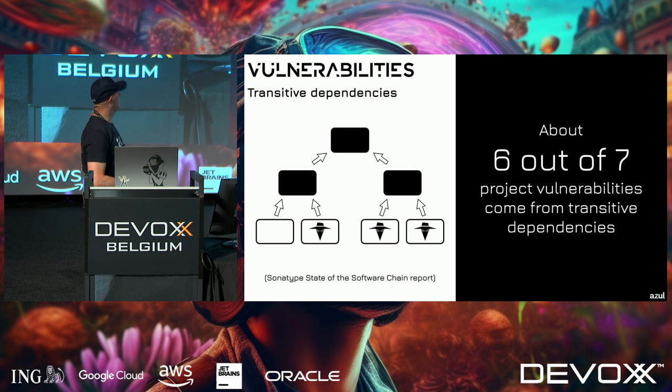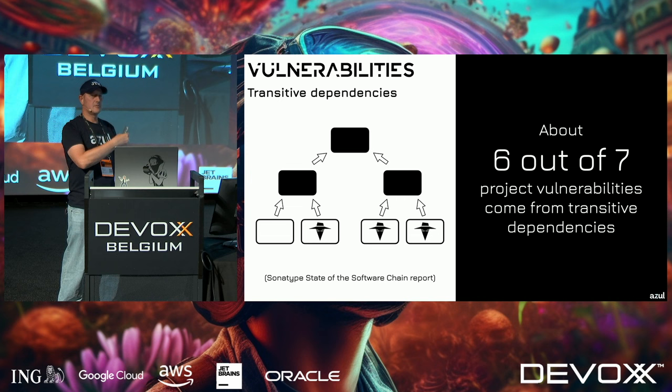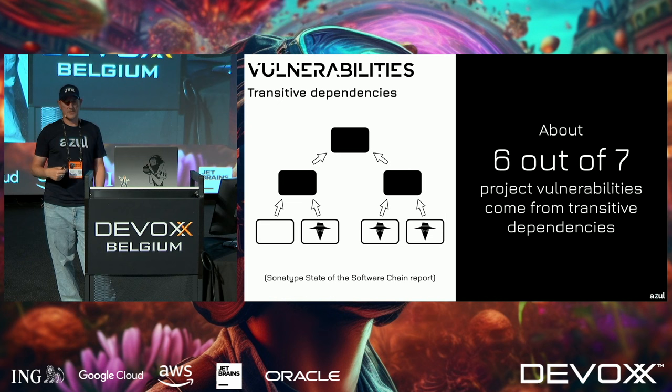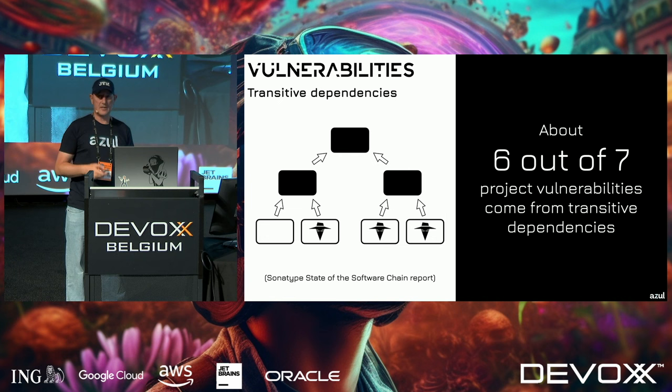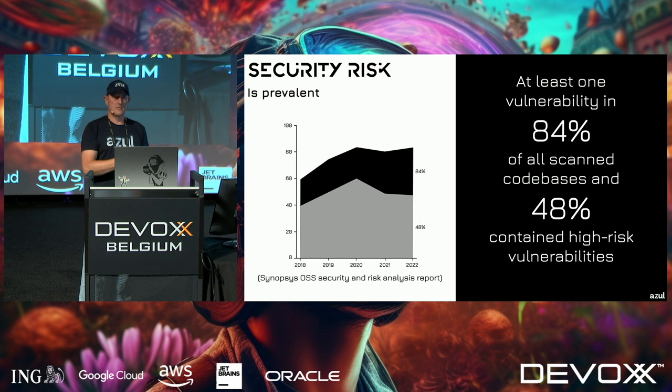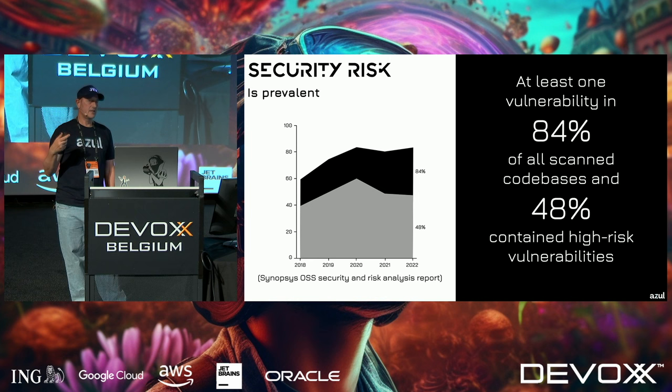Transitive dependencies are a big problem. You know your direct dependency is secure, but you have no idea what that dependency pulls in. Six out of seven project vulnerabilities come from transitive dependencies — from the Sonatype report — and many people are unaware this happens.